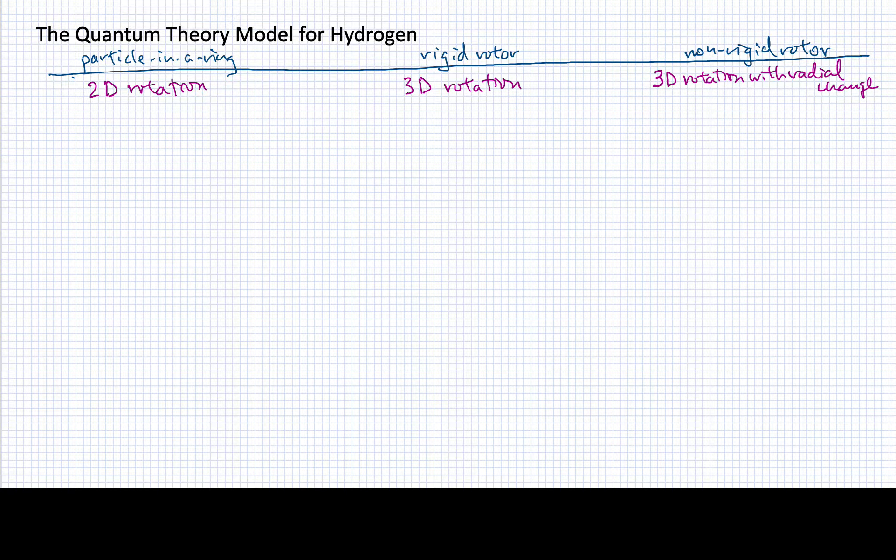We looked at the particle in a ring first. That was a case of 2D rotation, rotation that occurred entirely in a plane. In the xy plane, we had rotation of a single particle going around in a ring.